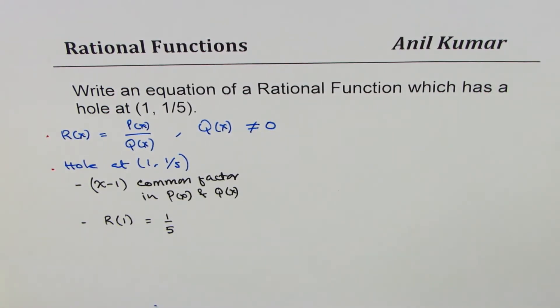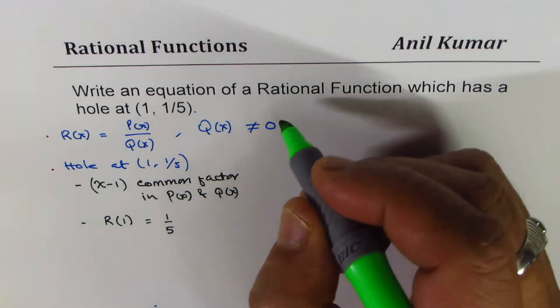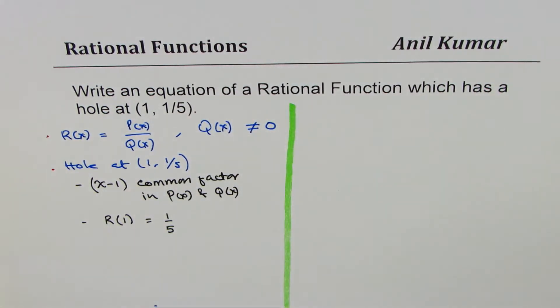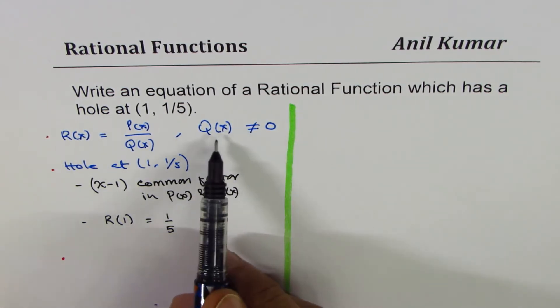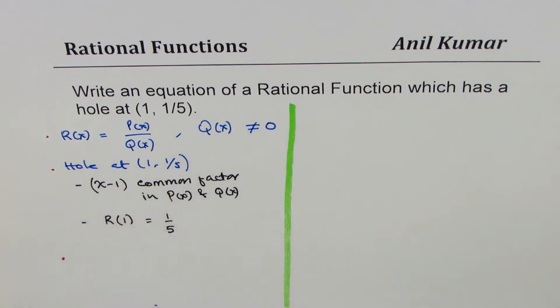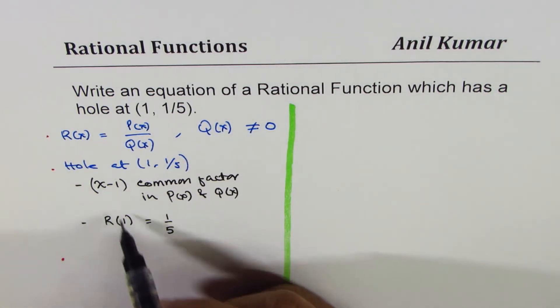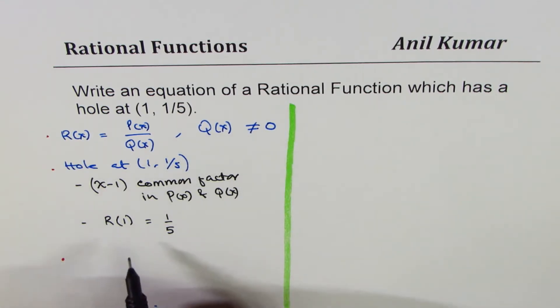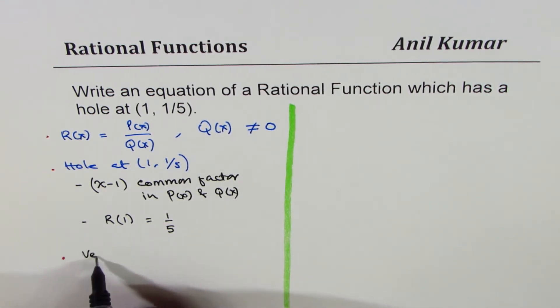Now let me add two more complications just to provide more information in this video. We have this condition Q(x) is not equal to 0. It leads to two things: one is a hole, which we saw and which we are going to see in the equation. The other thing is a vertical asymptote.